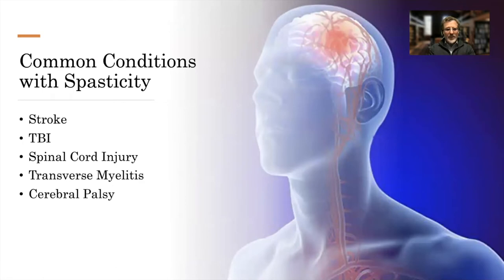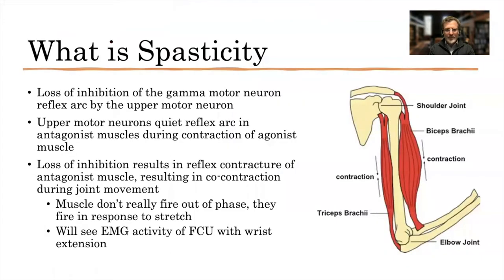What common conditions lead to spasticity? Stroke, traumatic brain injury, spinal cord injury, transverse myelitis, and cerebral palsy. Spasticity is nothing more than loss of the inhibition of primarily the gamma motor neuron reflex arc by the upper motor neuron. The upper motor neurons quiet the reflex arc in the antagonist muscles during contraction of the agonist muscle. Loss of this inhibition results in reflex contracture of the antagonist muscle, resulting in co-contraction during joint movement.